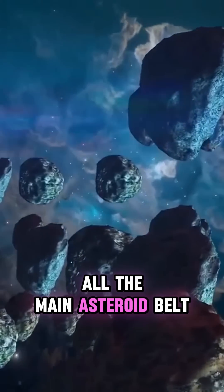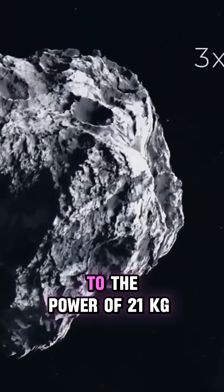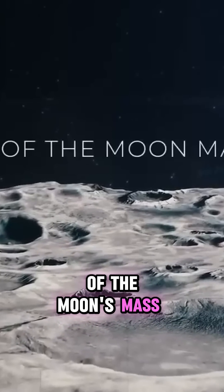the combined mass of all the main asteroid belt objects is relatively small, just 3 times 10 to the power of 21 kilograms, which is merely 4% of the moon's mass.